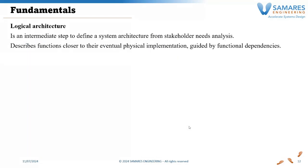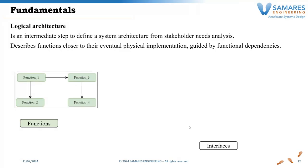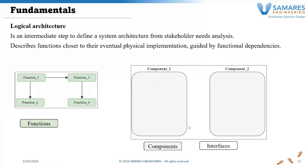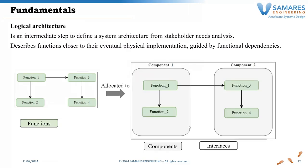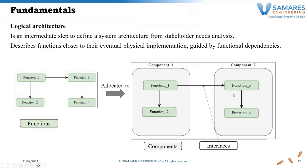So what is the issue here? Today you have functions, interfaces between these functions — functional exchanges — and you have to distribute and allocate functions to components. If you have a large number of functions, you will have a large number of functional exchanges crossing the boundaries of the components.